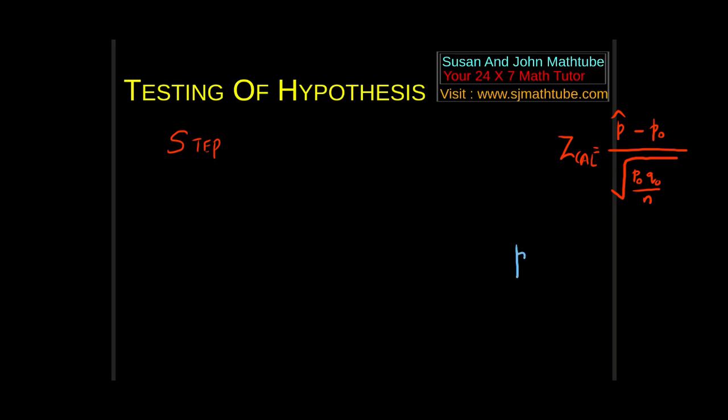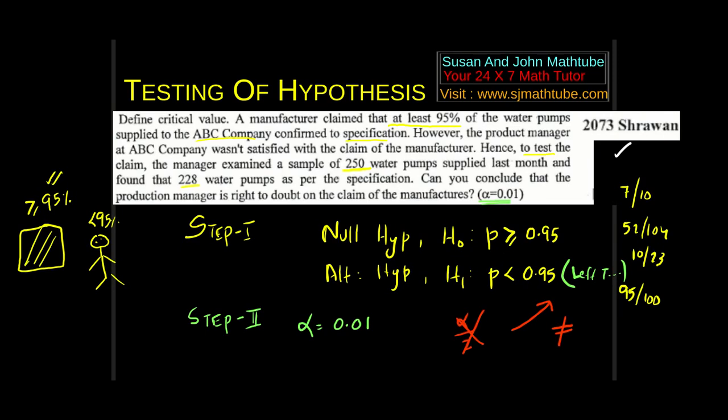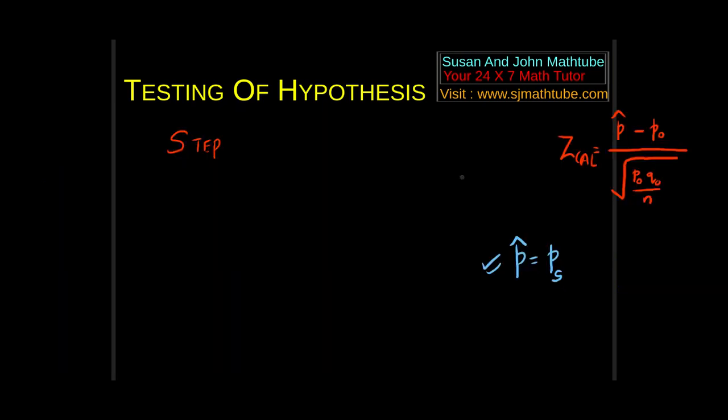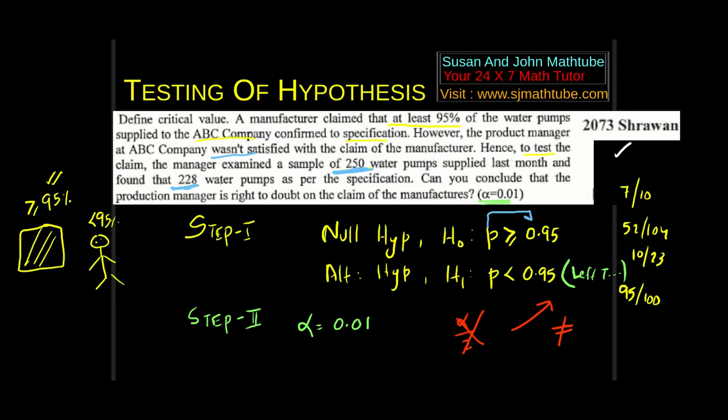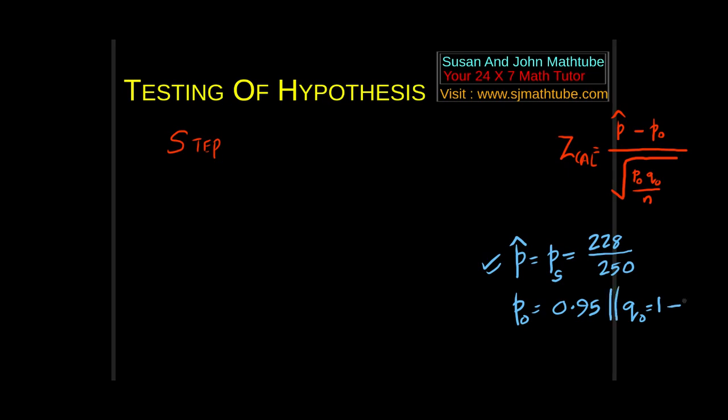Let's move on. Step number 3. Unlike single mean testing, single proportion is very easy. There is only one formula, Z calculated, and that is P cap minus P0, the whole divided by the standard error, that is root P0 Q0 by N. P cap means in some books instead of P cap, they use PS also. It means sample proportion. Look at this, if you read the question, you will understand. The manager was suspicious, right? What he did is he took 250 water pumps and he did some testing and he found that 228 are according to the specification. That is the sample proportion, 228 divided by 250.